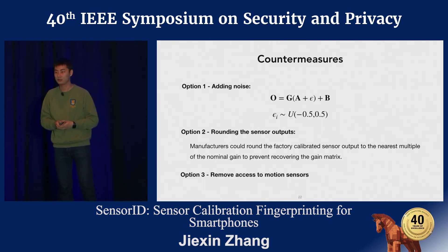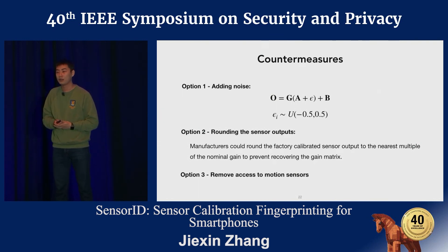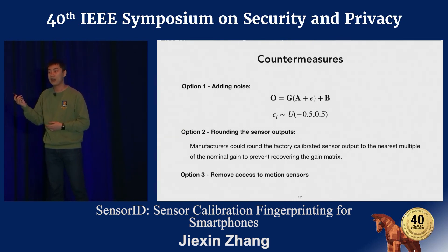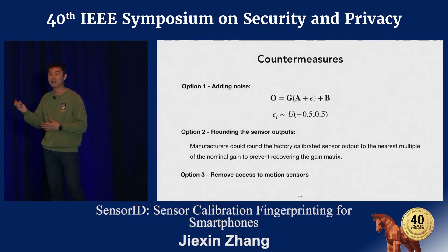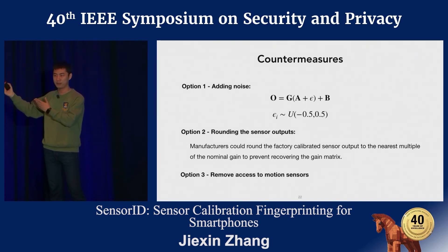Question: This seems to pop up a lot — mobile phones have tons of sensors. Do you think there's a general-purpose strategy to solving this, or do you have to do something unique for each case? Response: This approach is not just restricted to motion sensors — there are other sensors that can be fingerprinted using a similar approach. I don't think I'll write another paper on another sensor if the approach is similar. But if the calibration behavior is different from the model we used here, then I might.